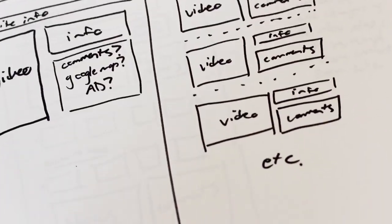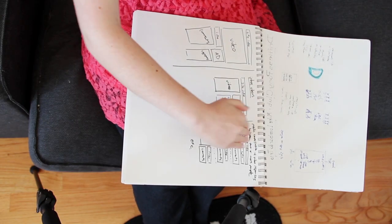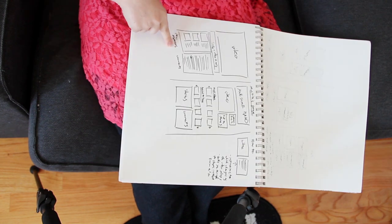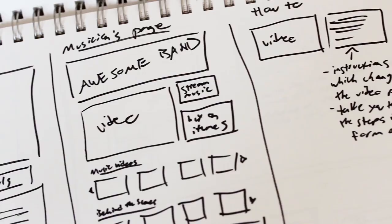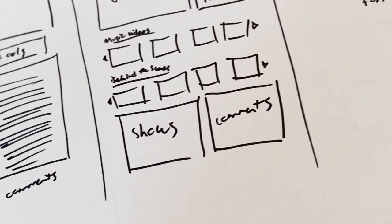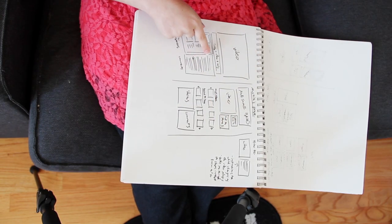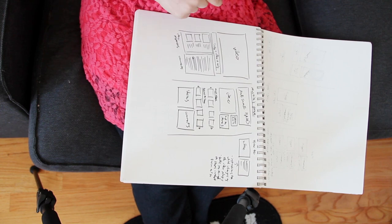For this one, I wanted to do a back and forth of video responses, where you can just see them all down a list, all on one page. Oh, this one was separating video responses from the comments. This one was a band page, so it's like you have a video, you can stream the music right there, you can buy it on iTunes right there, you can see the other music videos right there.